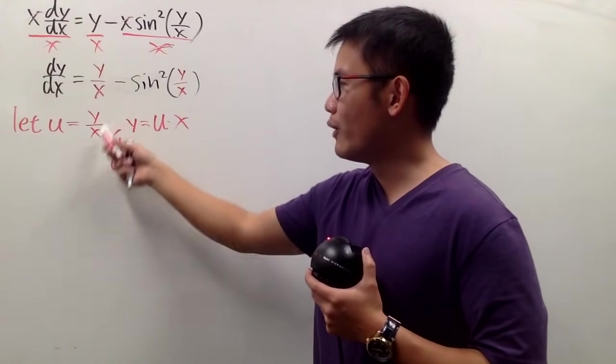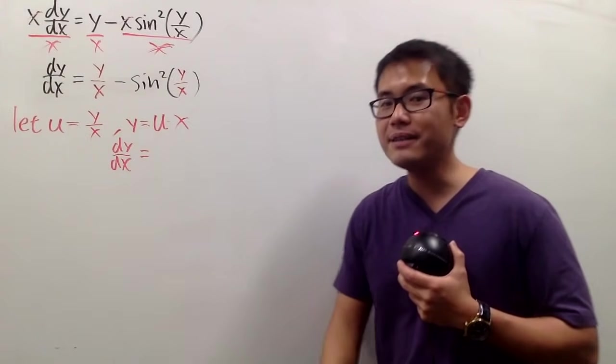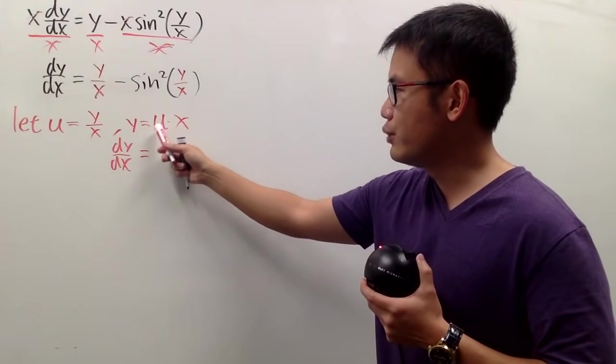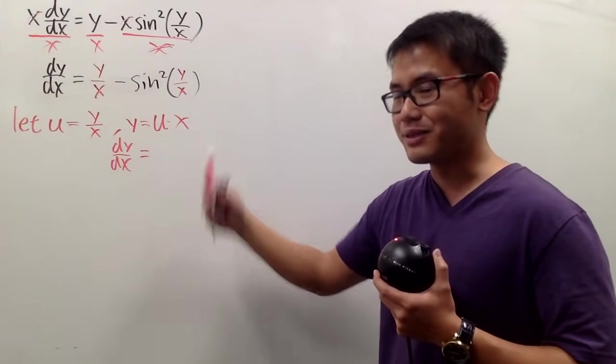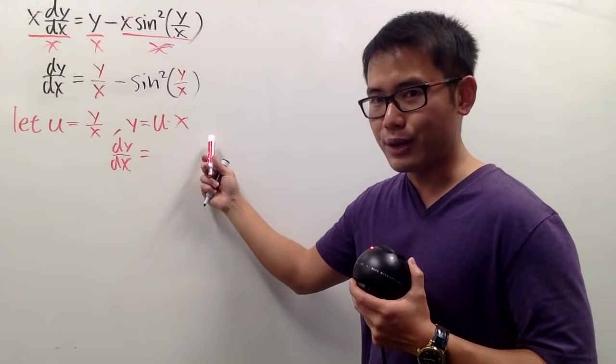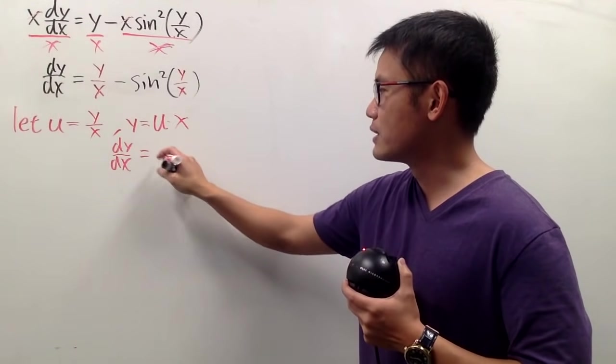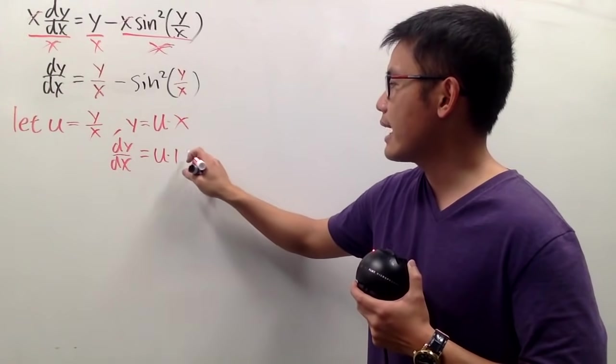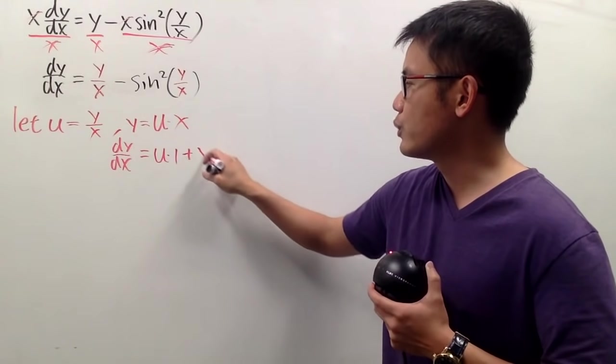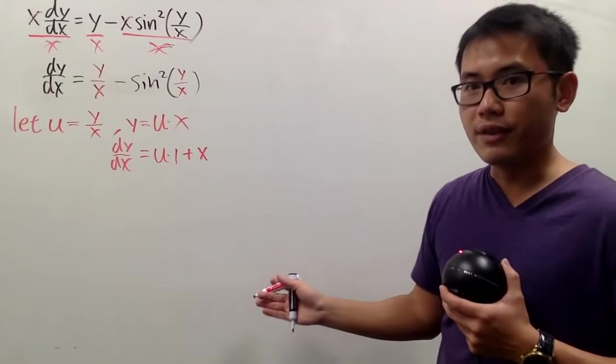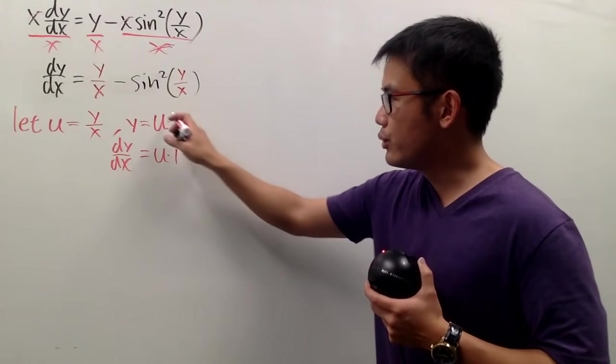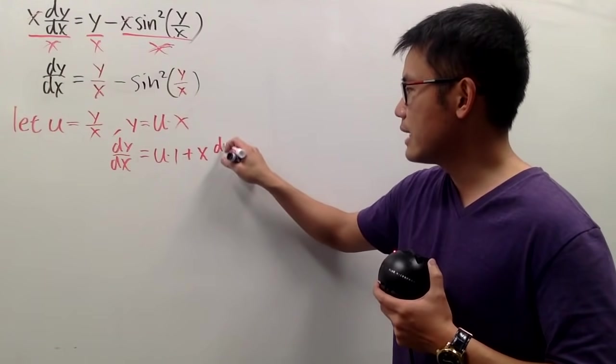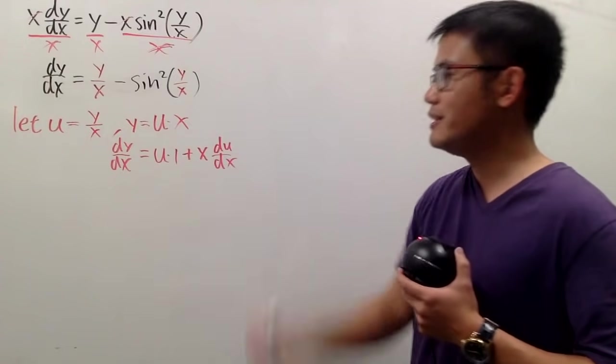u is equal to y of x, so u is also a function of x, right? Here is the product of two functions in terms of x. We have to use the product rule. Now, I will keep the first function as how it is. Multiply by the derivative of the second, which is 1. And then we add it with the second function, which is x. Times the derivative of the first. Derivative of u, because u is a function of x. That will be du dx.